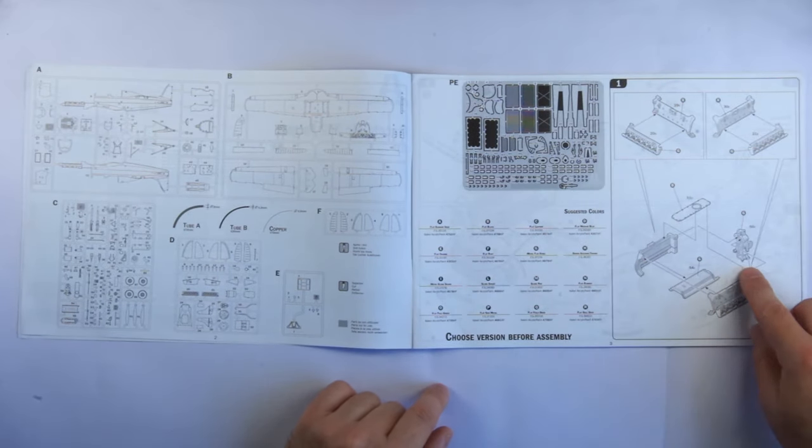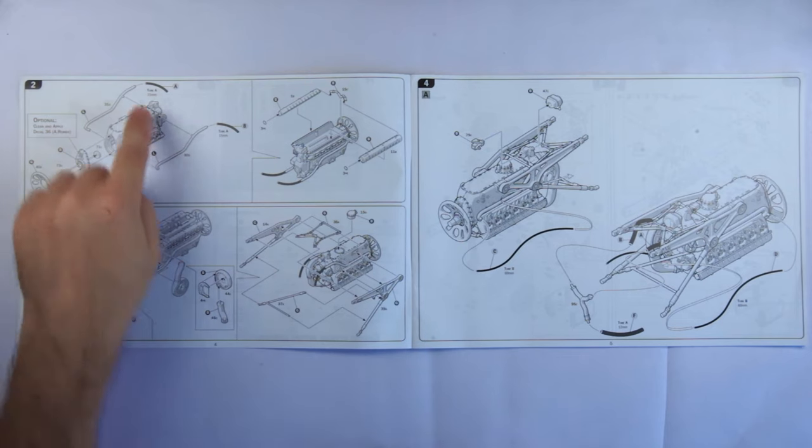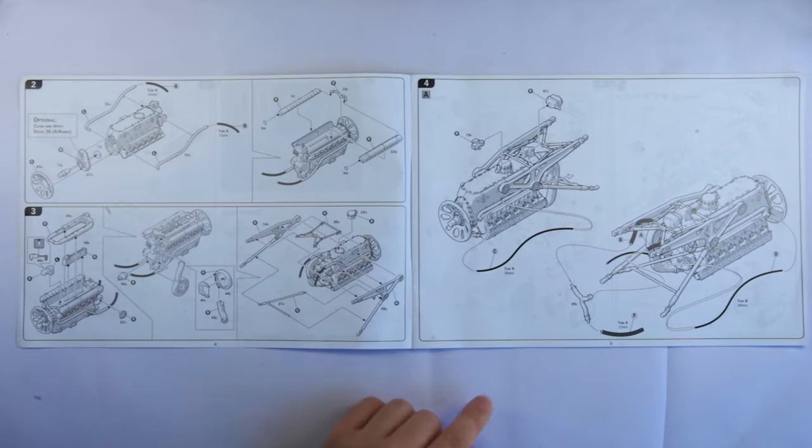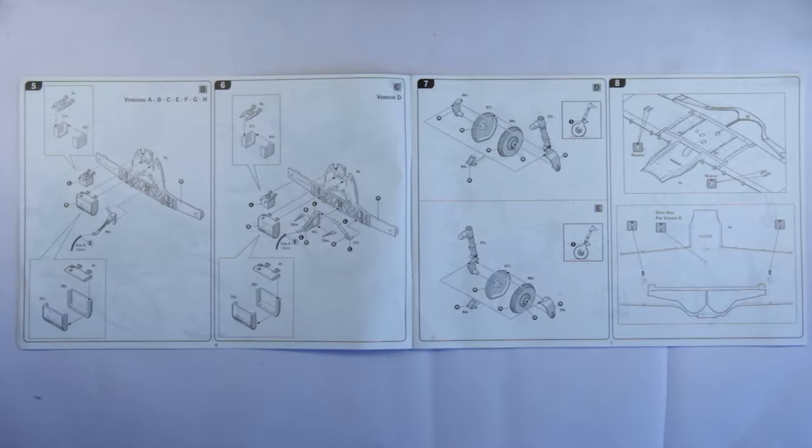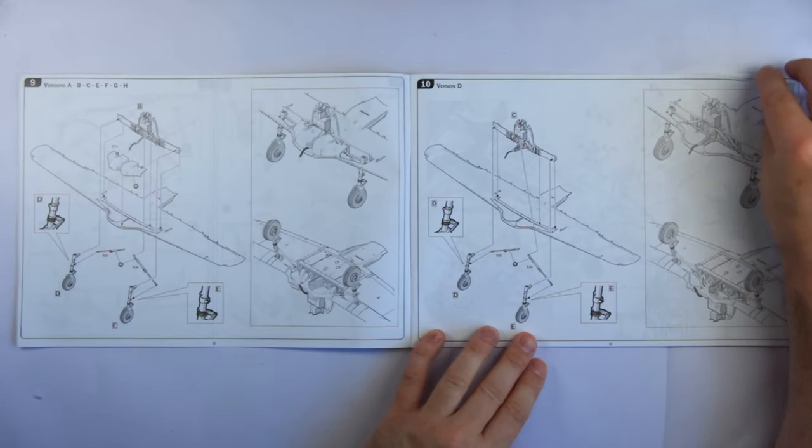We then crack straight on with the engine build, which continues onto the following two pages. These seem pretty unambiguous, including giving you measurements for the included tubing for example. Building then continues over the next pages in large clear exploded diagrams.